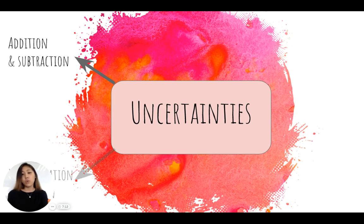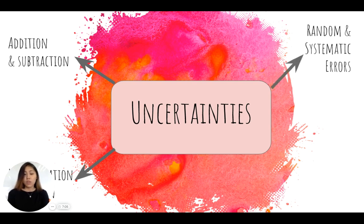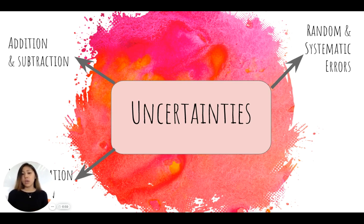You could also use uncertainties when you're multiplying and dividing, and we'll take a look at that. There are also uncertainties used in random and systematic errors — looking at the uncertainty, how can we analyze this to see if random error dominates or if systematic error dominates.